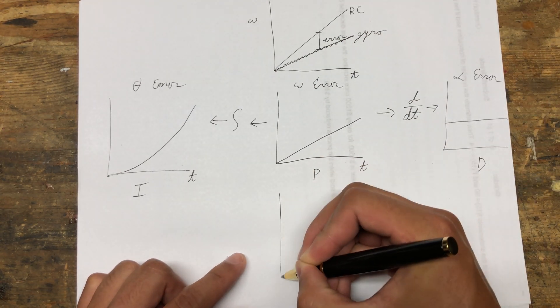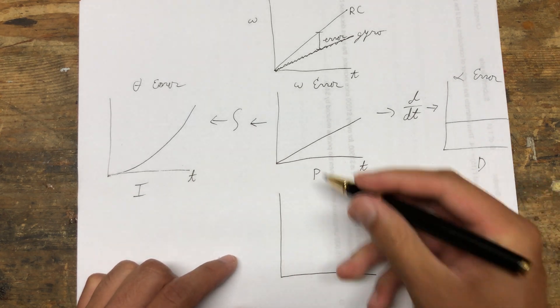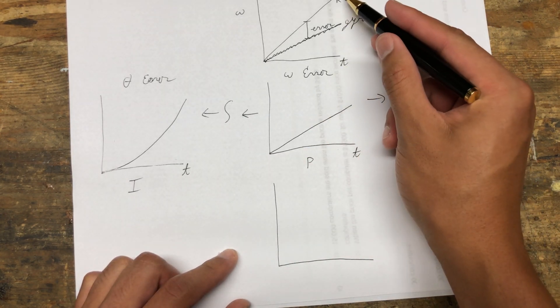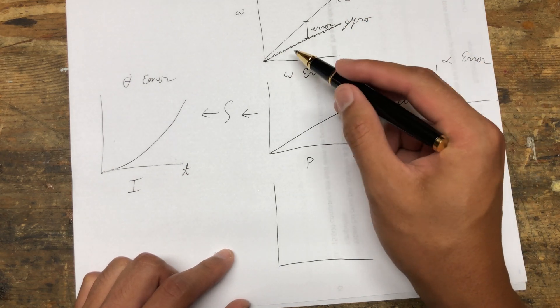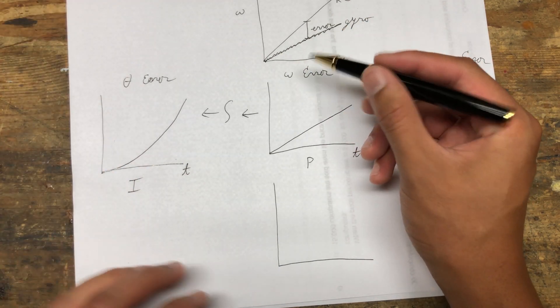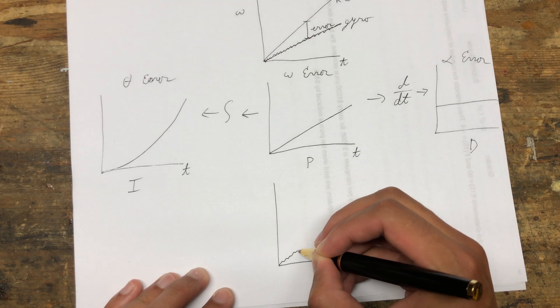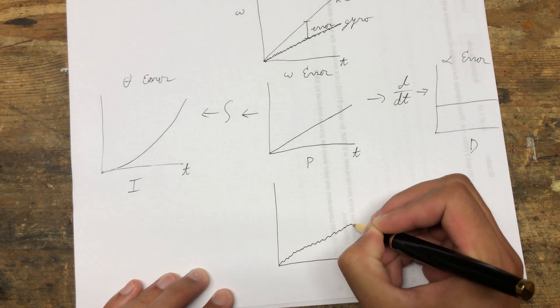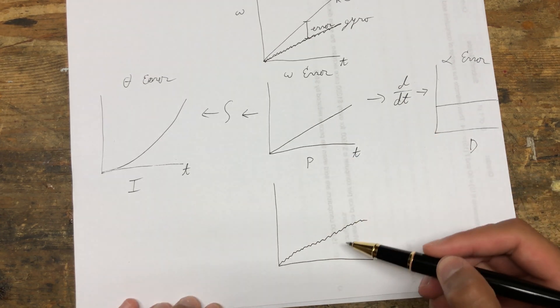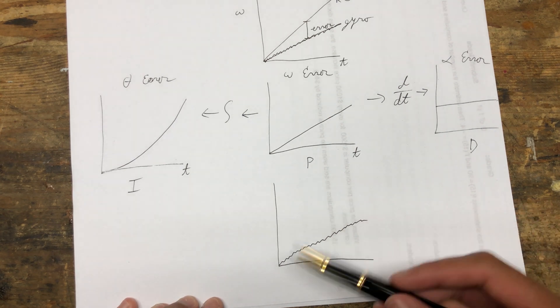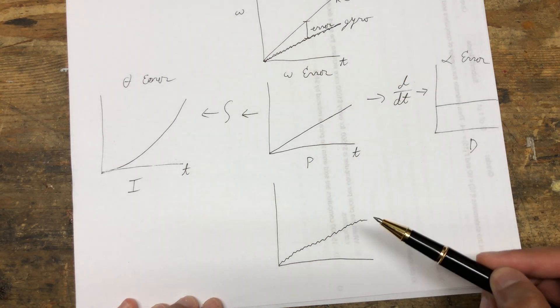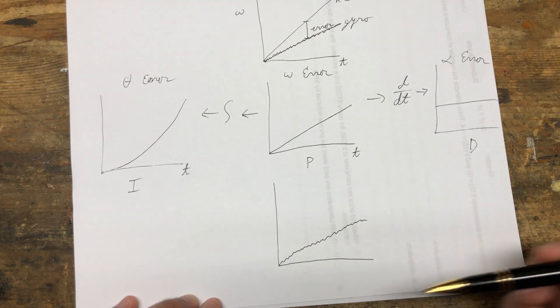For the angular velocity error, it's the RC rate minus the gyro rate. This amount of noise in the gyro signal is going to make its way through into our angular velocity error, our rate of rotation error. The severity of this noise stays the same for the P-term, essentially.